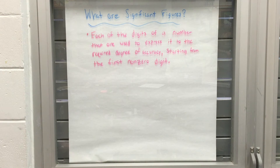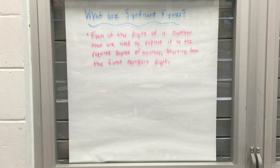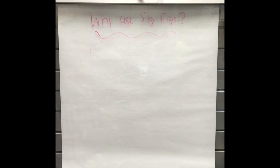To begin we must ask: what is a significant digit? A significant digit is each of the digits of a number that are used to express it to the required degree of accuracy, starting from the first non-zero digit.